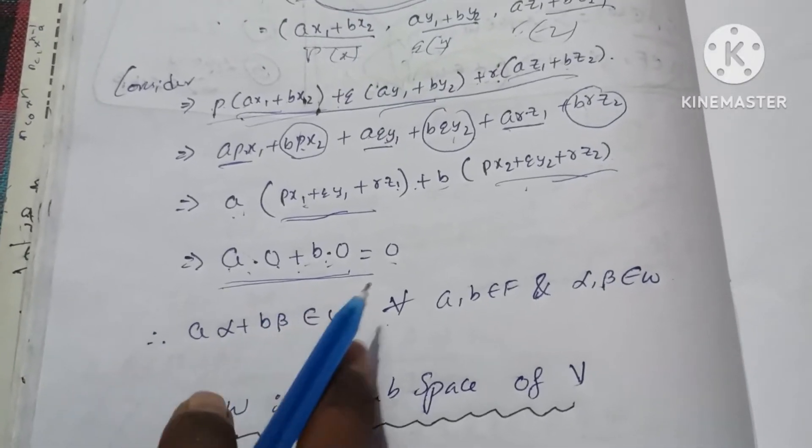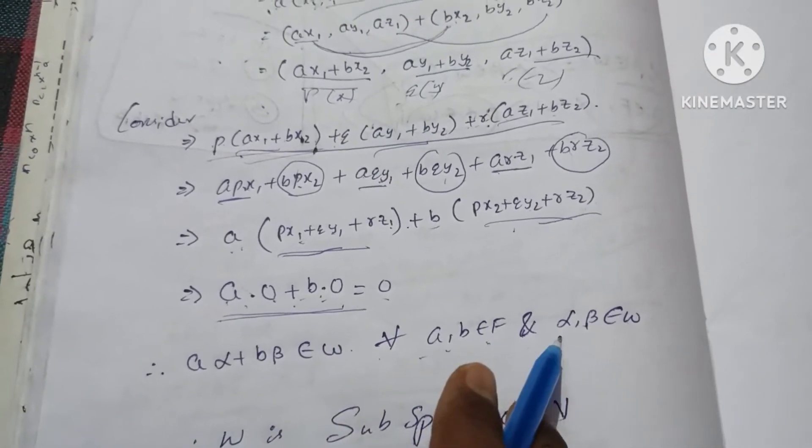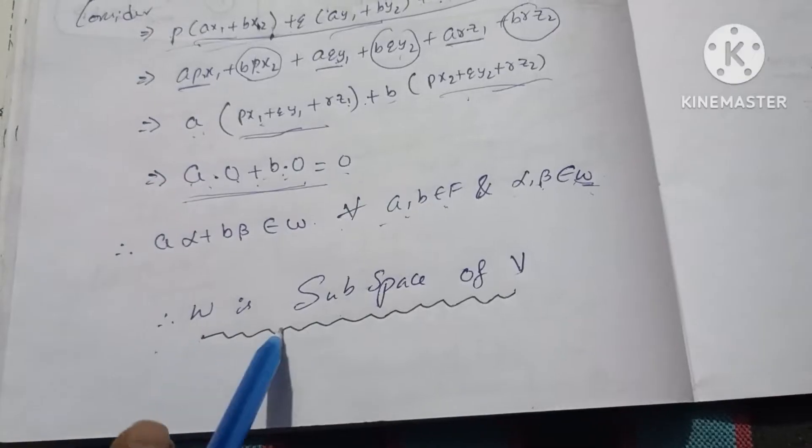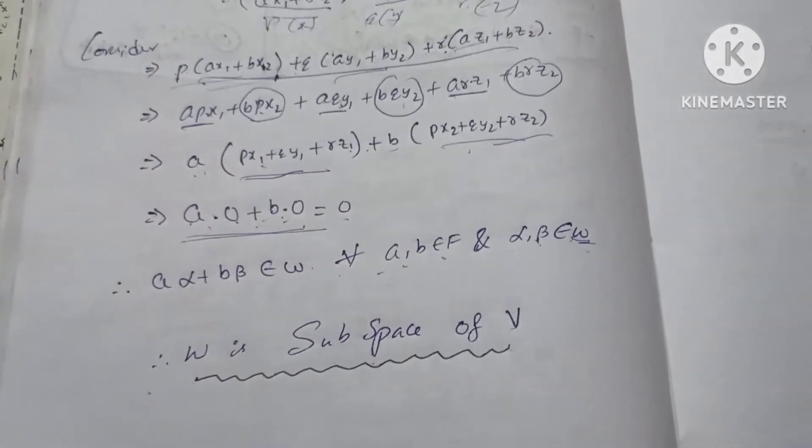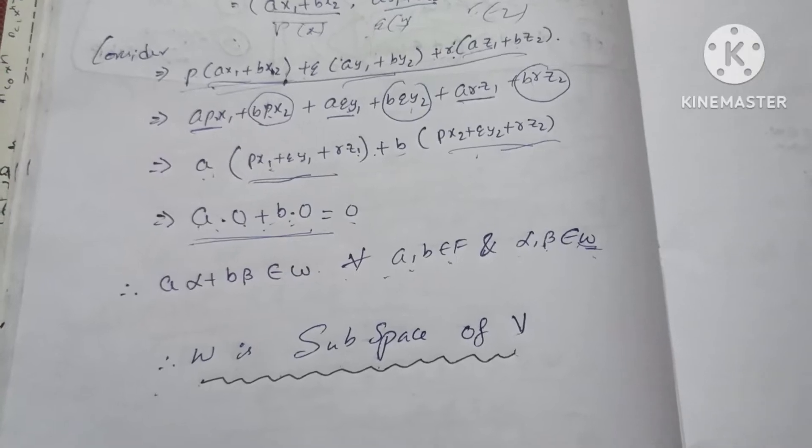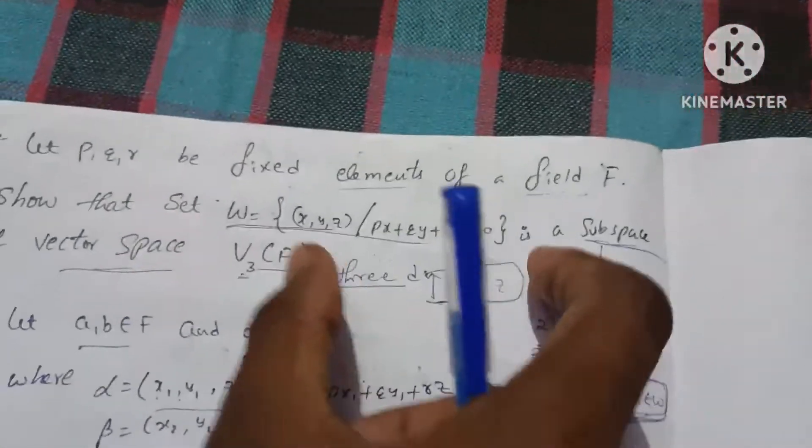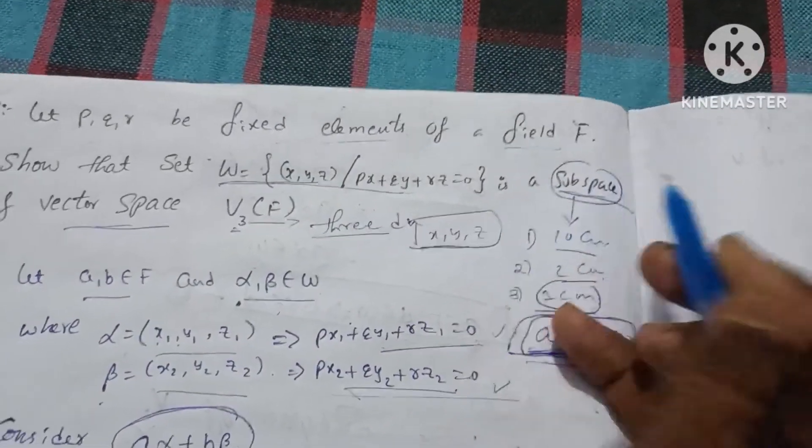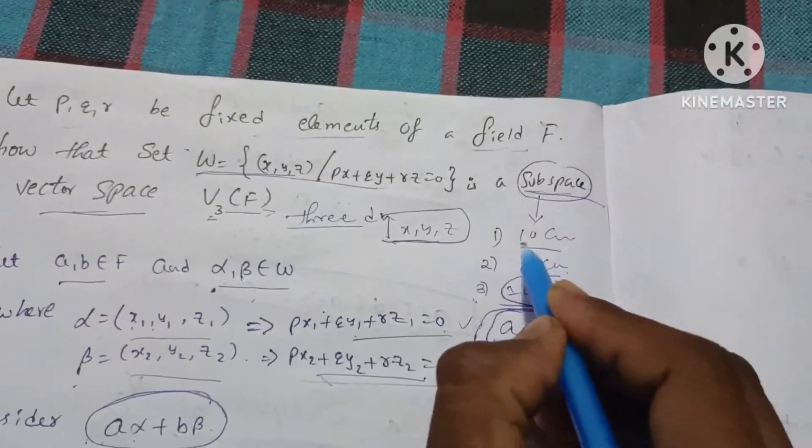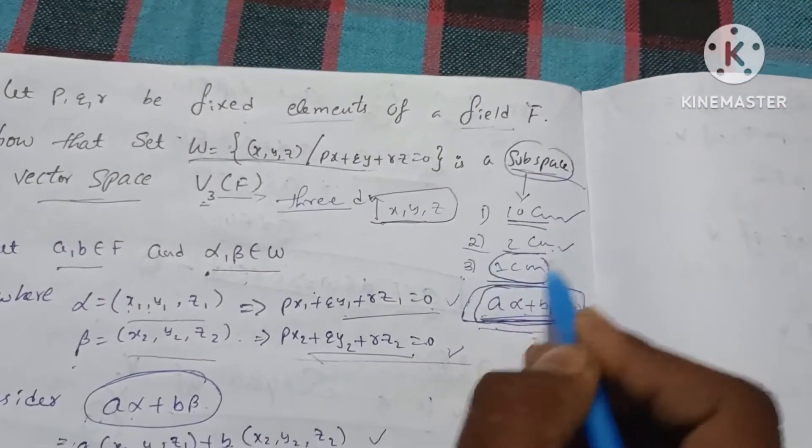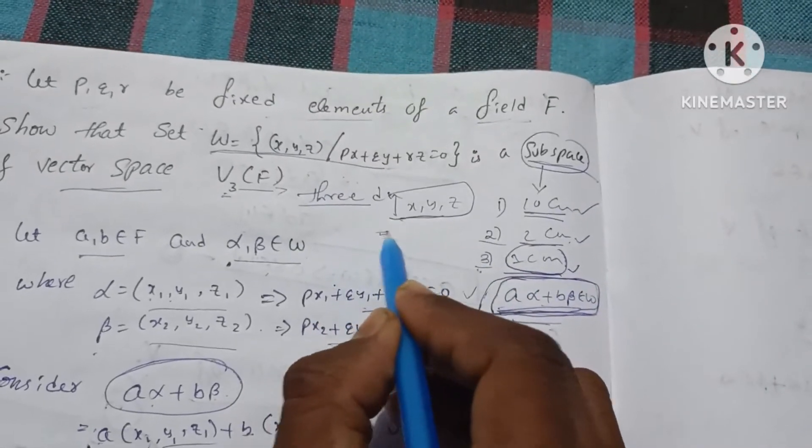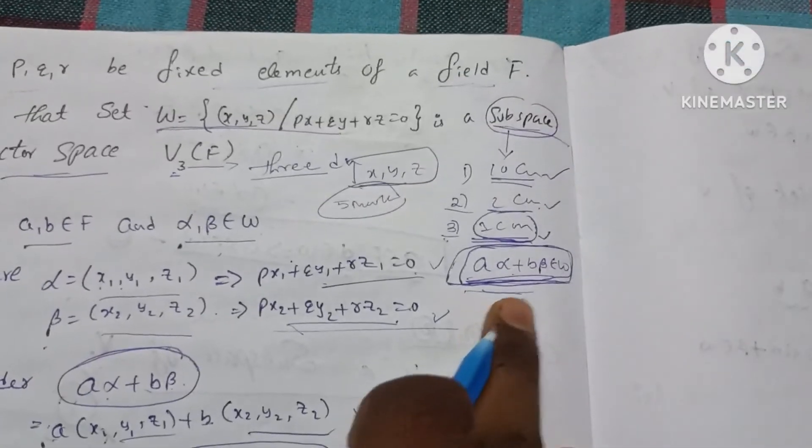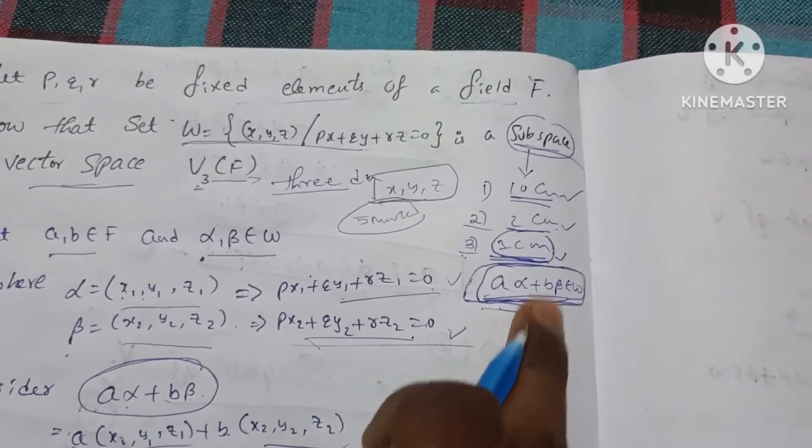So a alpha plus b beta belongs to W, where a, b belongs to F and alpha, beta belongs to W. Therefore W is a subspace of V. Subspace with one condition, this is the main aim. Maximum 5 marks.